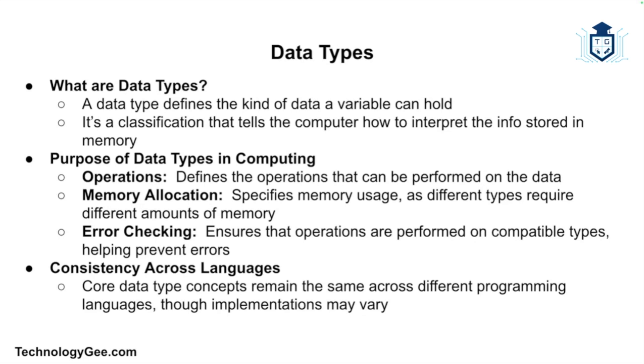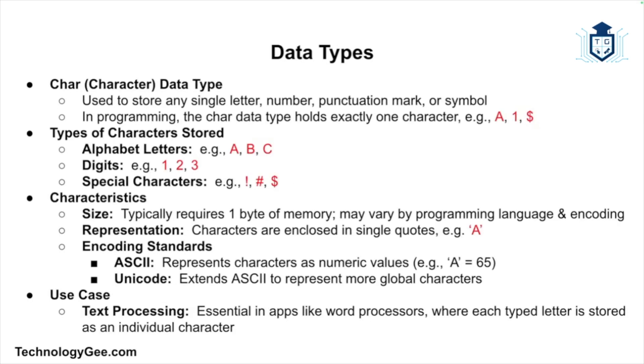Let's dive into the different fundamental data types, starting with char or character. A character is any single letter, number, punctuation mark, or symbol. In programming, the character data type stores exactly one character. Its characteristics include size, which typically requires one byte of memory. Characters are often enclosed in single quotes, for example the letter A. They're also represented by ASCII and Unicode. In ASCII, each character is represented by a number, so the character A is represented by the number 65. The use case for characters is text processing, where each letter is stored as a character.